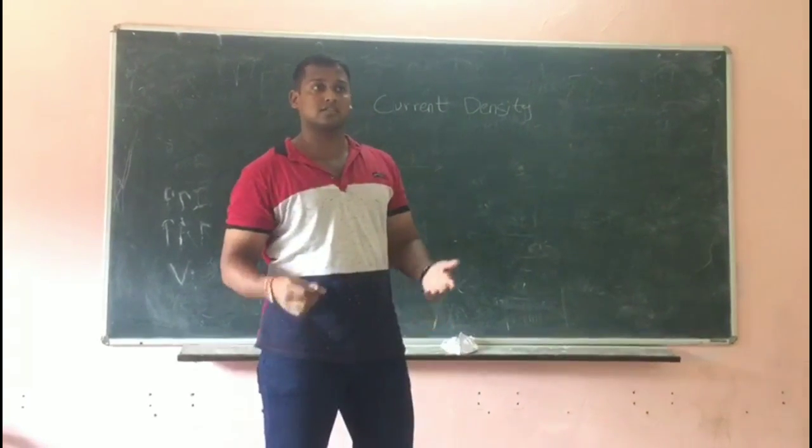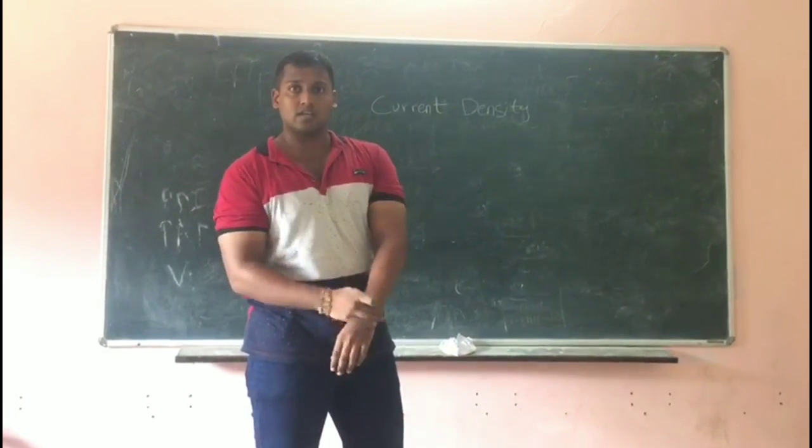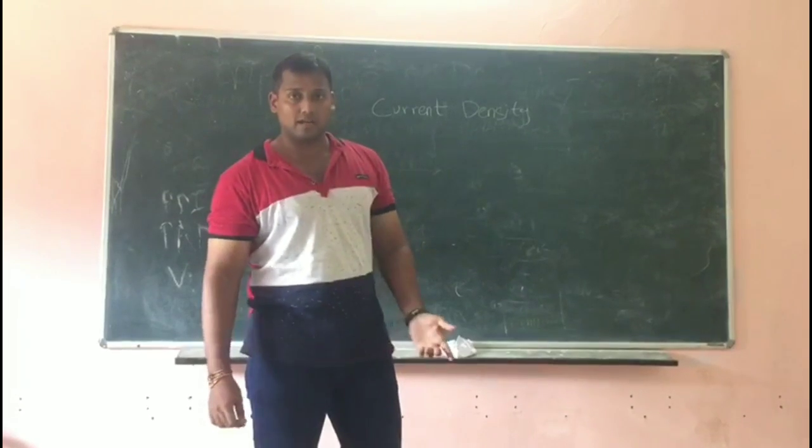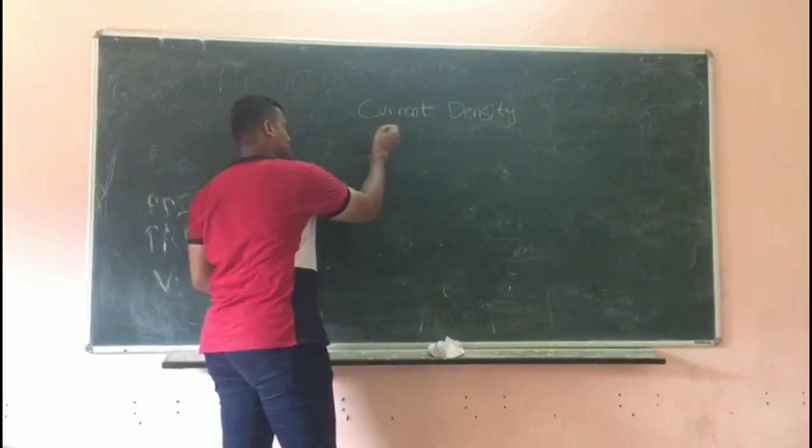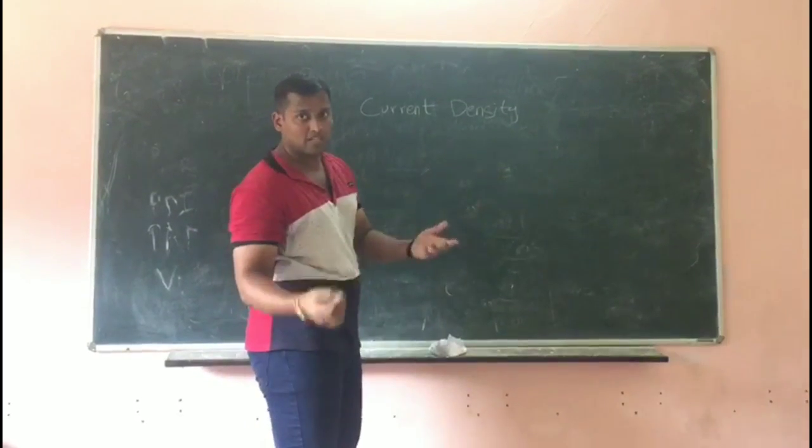Current density is the density of current in a cross sectional area. So we can write it as i is equal to j. It is denoted by j.